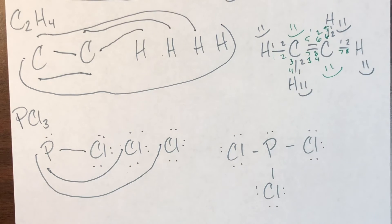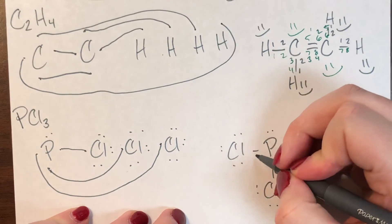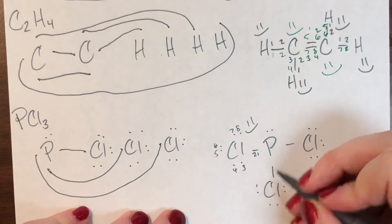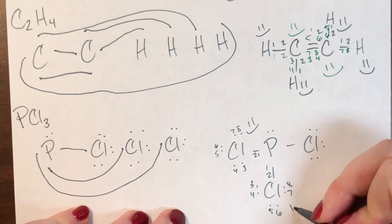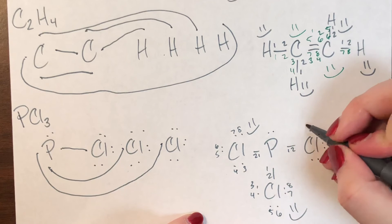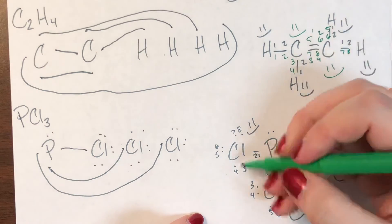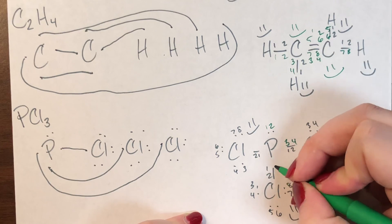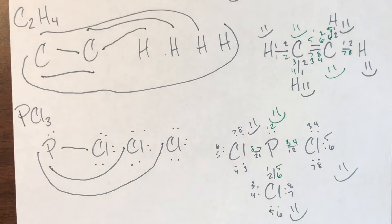Counting all electrons to verify: the first chlorine has one, two, three, four, five, six, seven, eight — good. The second chlorine has one, two, three, four, five, six, seven, eight — also good. The third chlorine has one, two, three, four, five, six, seven, eight — also good. Phosphorus has one, two, three, four, five, six, seven, eight — phosphorus is also good. So this is a valid Lewis dot structure for PCl3.